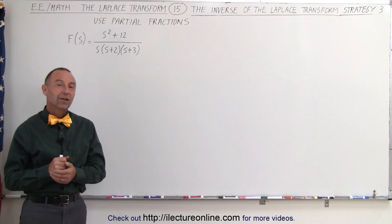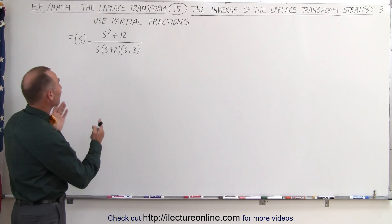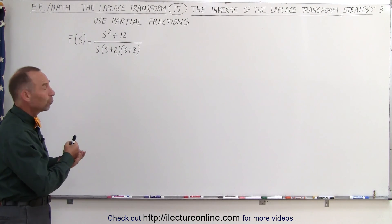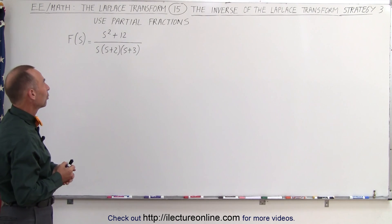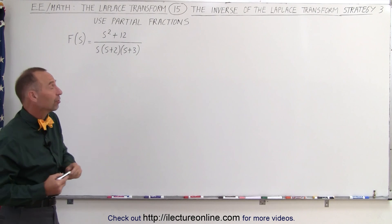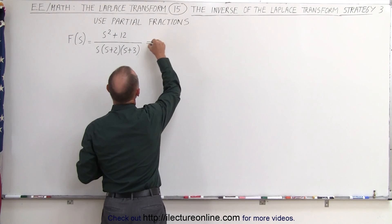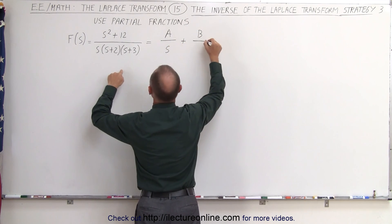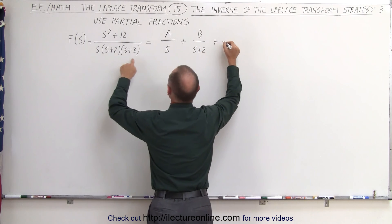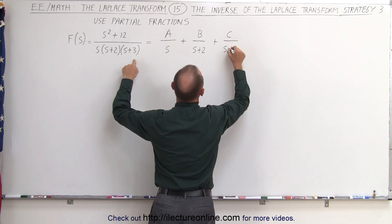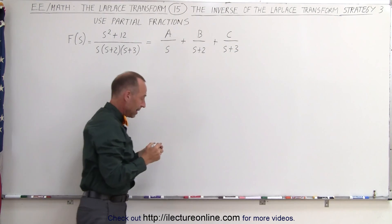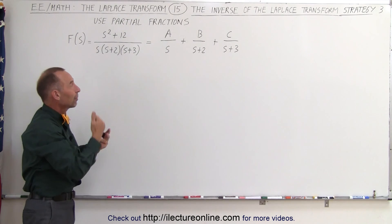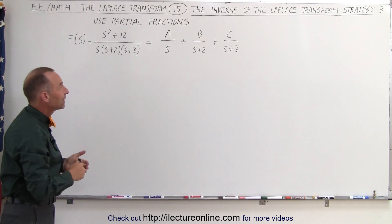Welcome to ElectronLine. Another strategy is to take the function that's in the frequency domain and write it as the sum of fractions using what we call the method of partial fractions. This particular example can be written as a over s, plus b over s plus 2, plus c over s plus 3. If we knew what a, b, and c were, we can go ahead and find the inverse Laplace transform and write the function in terms of the time domain.